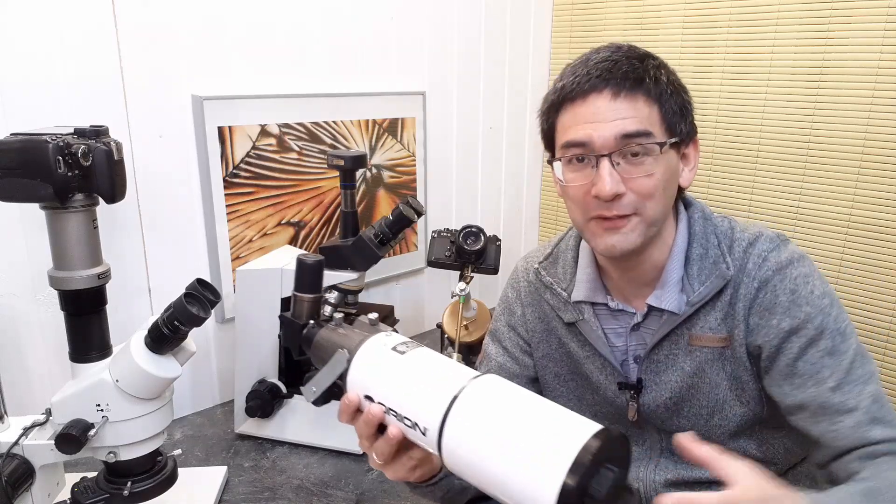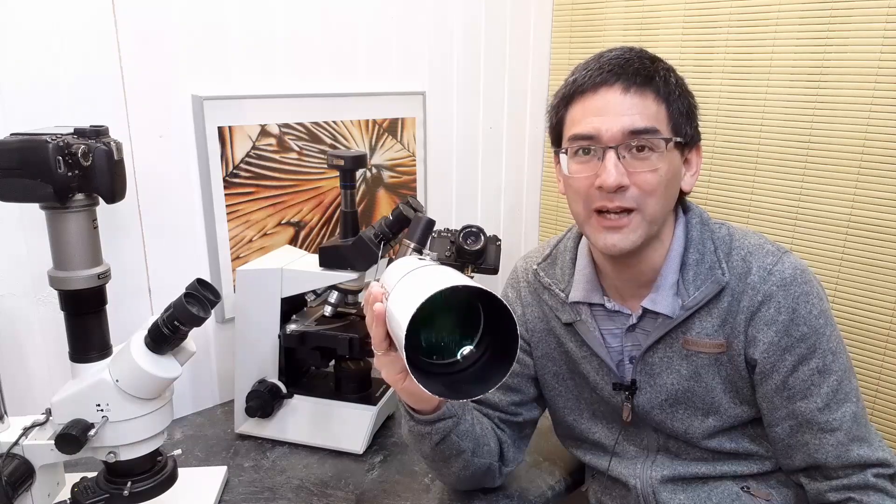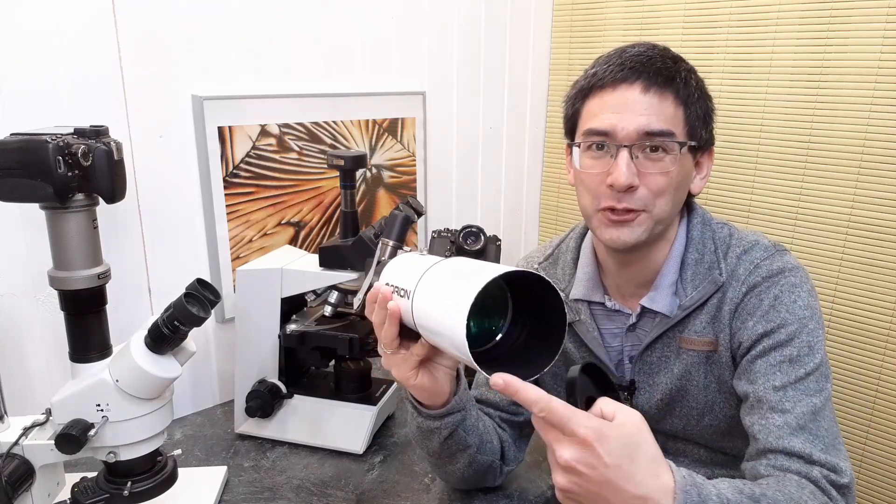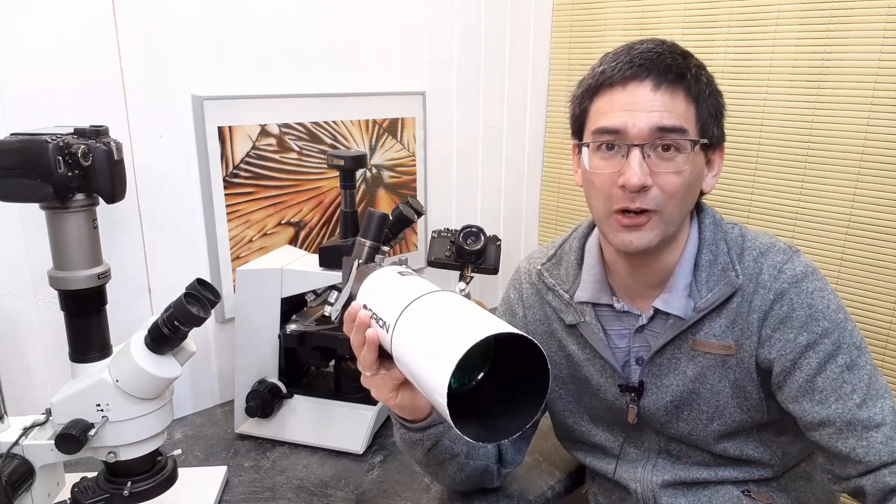The same idea in microscopy, people think high magnification is everything, but in reality, the whole point of a telescope is actually to gather light, and the larger the aperture here, the more light it's able to gather, and the fainter the stars are that you're able to see.